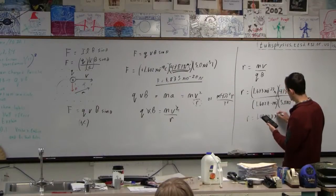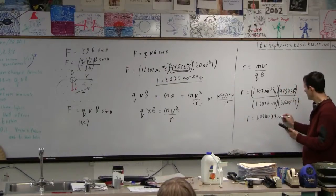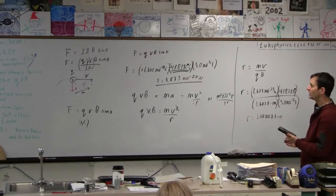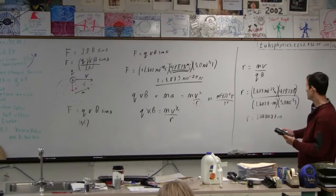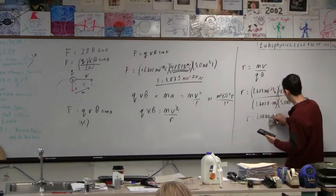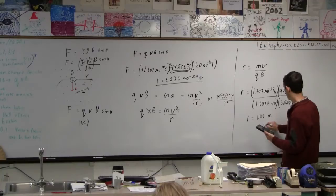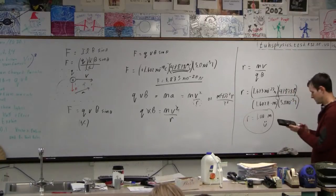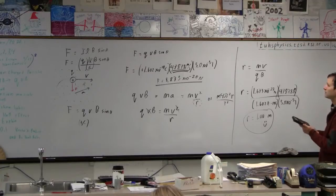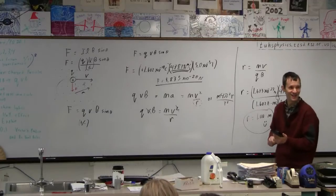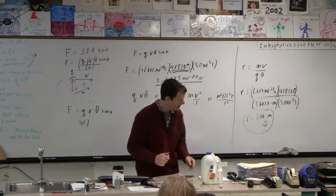Zero. Zero. Oh my gosh. Almost. I might have almost. There we go. We only have how many sig figs? I don't remember — like two or something like that. There it is. Isn't that wonderful? This didn't come out to like 666 or something like that. Who said that? That was bad. I only thought that.